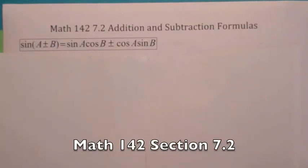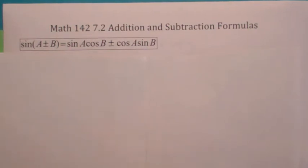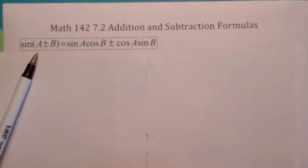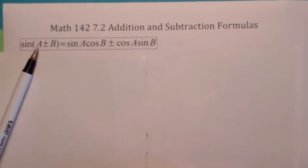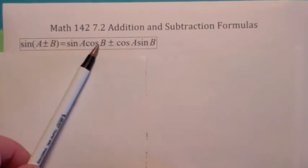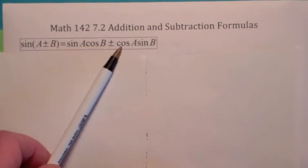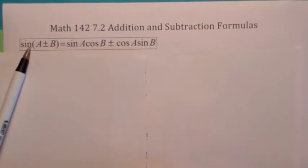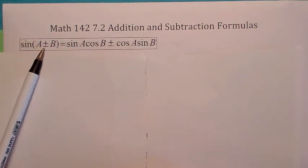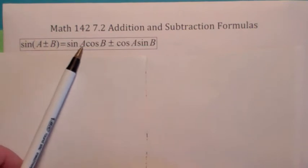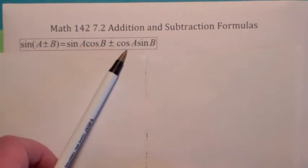I hope you have those identities down from 7.1, because we're going to add a few more to the list. We're going to look in 7.2 at the addition and subtraction formulas for sine and cosine. This is the addition and subtraction formula for sine of two angles: sine of A plus B is sine A cosine B plus cosine A sine B. Sine of A minus B would be sine A cosine B minus cosine A sine B.